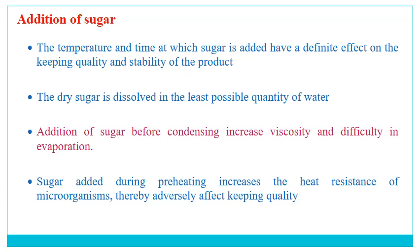Sugar is added at the end of the condensing process. The temperature and time at which sugar is added have a definite effect on keeping quality and stability. Dry sugar should be dissolved in the least possible quantity of water before being added. Adding sugar before condensing increases viscosity and creates difficulty in evaporation. Sugar added during preheating increases the heat resistance of microorganisms and helps them survive, adversely affecting keeping quality. Therefore, sugar should be added at the later stage after condensing.